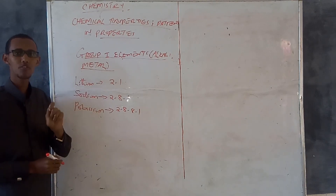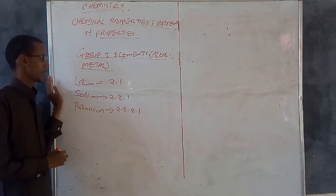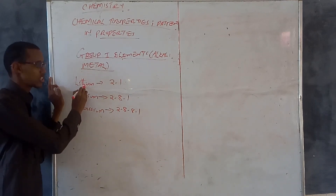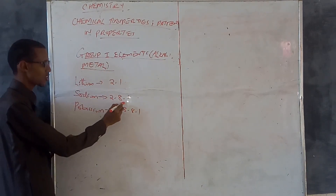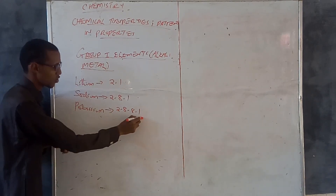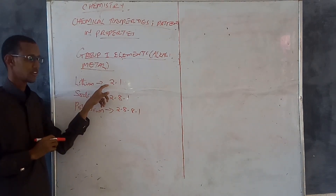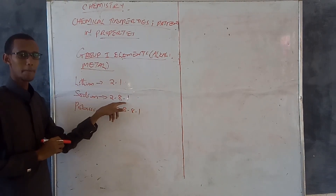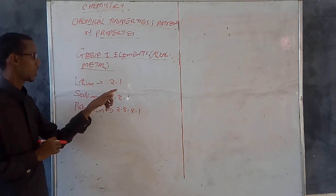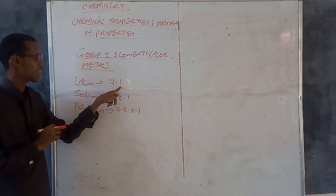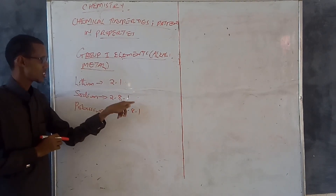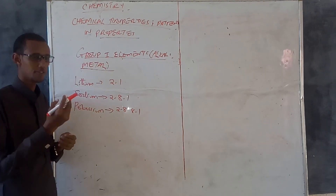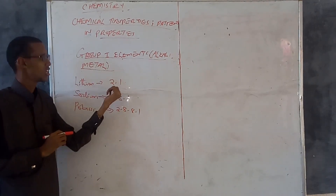They also belong to the same chemical family. However, if we check the number of occupied energy levels, they differ: lithium has two, sodium has three, and potassium has four occupied energy levels — so they belong to different periods: period two, three, and four respectively. But for grouping, we check the valence electron: lithium one, sodium one, potassium one. Since all have one valence electron, they belong to the same group and the same chemical family known as the alkali metals.